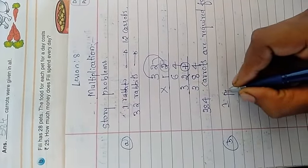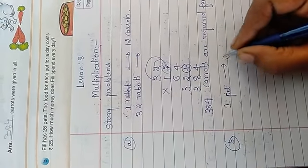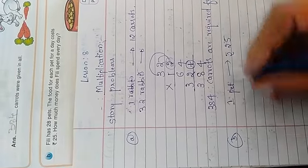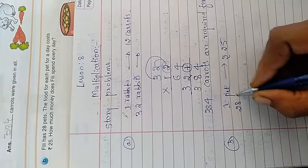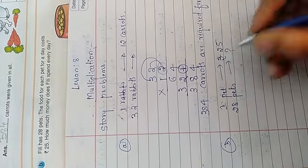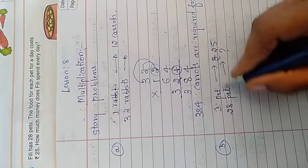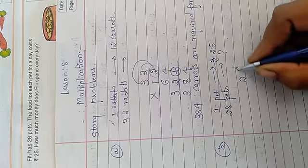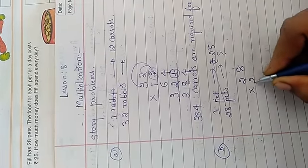For one pet, how much rupees she required? 25 rupees she required. Totally 28 pets are there. So how much money she need for one day, they are asking. Again multiplied like this. 28 multiplied by 25.